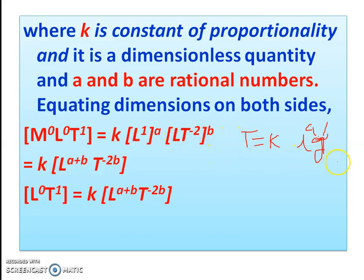Acceleration due to gravity is an acceleration. The dimension of acceleration is derived from the formula: acceleration equals velocity upon time. Therefore the dimension of acceleration is L to the power 1 and T to the power minus 2. So g has dimension L¹T⁻².